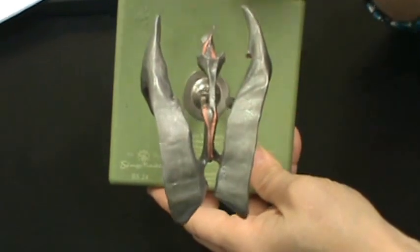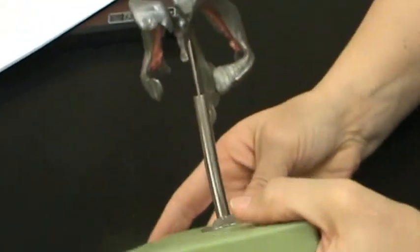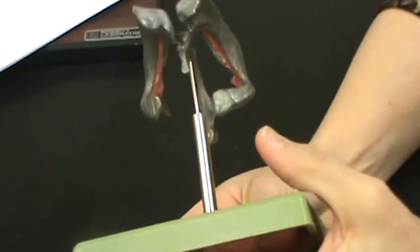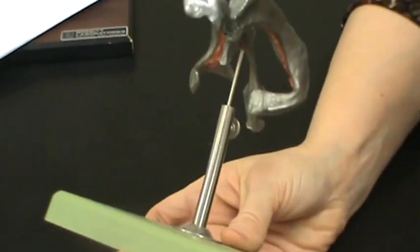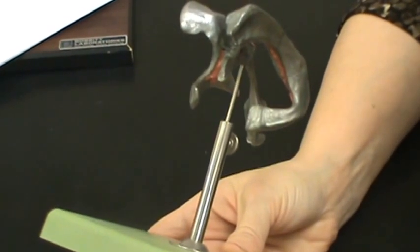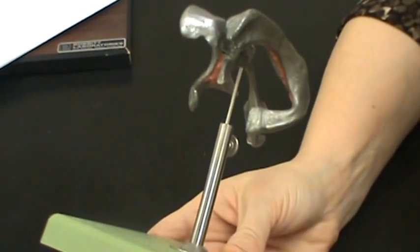Okay, the choroid plexus, see the pink structures on the model? That is the choroid plexus. The choroid plexus is made up of ependymal cells, and the ependymal cells secrete cerebral spinal fluid. That's one of your neural glia cells.